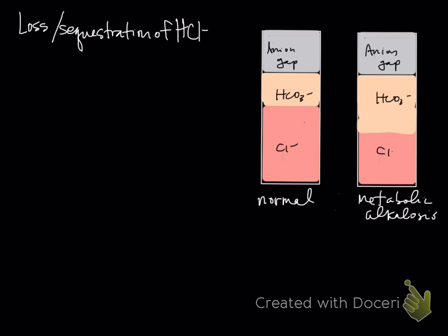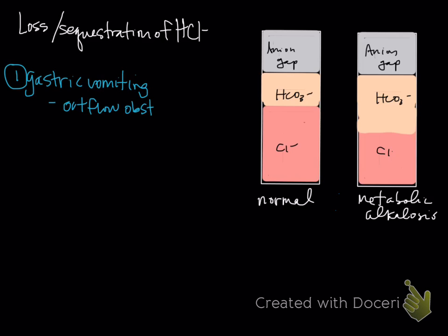HCl is essentially gastric content. When we think about this, we think about it in terms of small animals versus large animals. In small animals, what we're talking about is gastric vomiting. The gastric vomiting is occurring most often from a gastric outflow obstruction — something essentially blocking the pylorus or near there, resulting in gastric contents not remaining within the body.